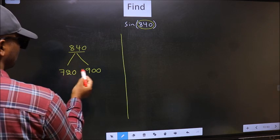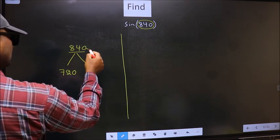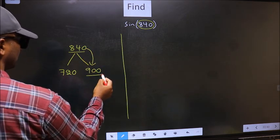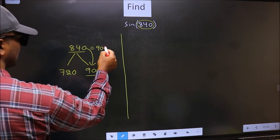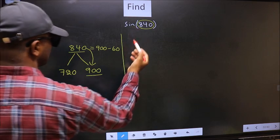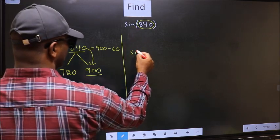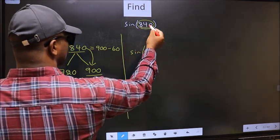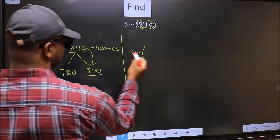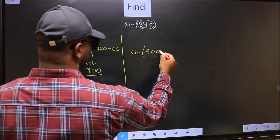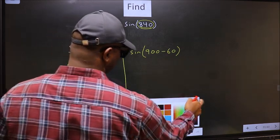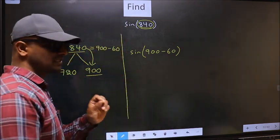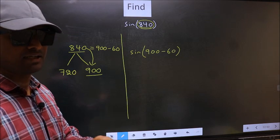Now 840 is close to which number? This is close to 900. So 840 now should be written as 900 minus 60. So this will become sin. In place of this, we should write this: 900 minus 60. This is your step 1.